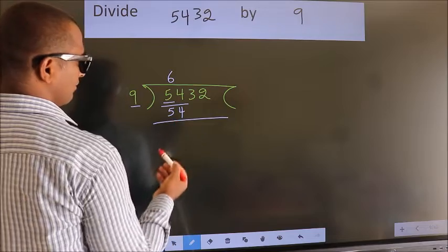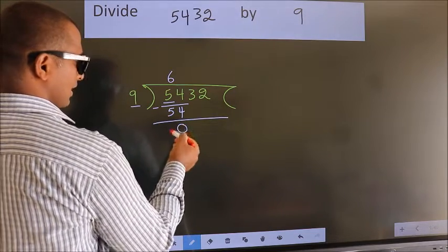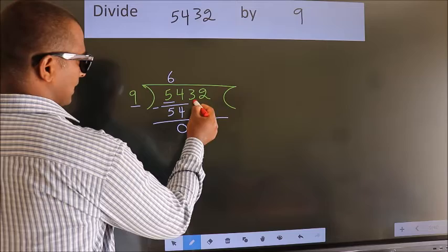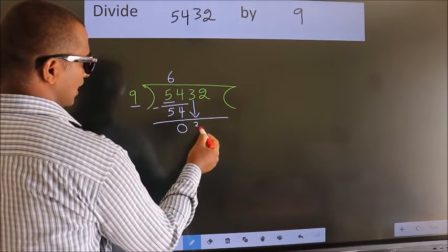Now we should subtract. We get 0. After this, bring down the beside number. So, 3 down.